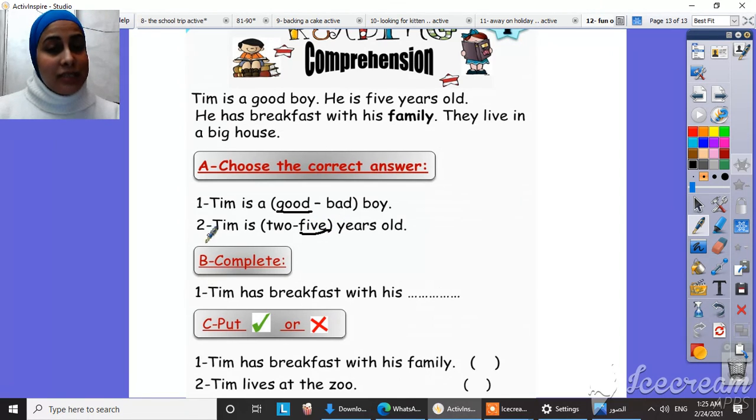Complete. Let's complete the sentence together. Tim has breakfast with his home. With his family. Super. So let's write family here. F-A-M-Family. Super.